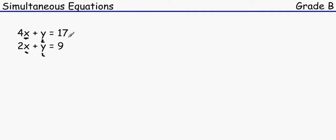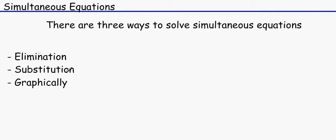There are three ways to solve simultaneous equations to find what x and y are: elimination, substitution, and a graphical method. The graphical way is arguably the easiest, but it takes a lot of time. Let's look at elimination first.